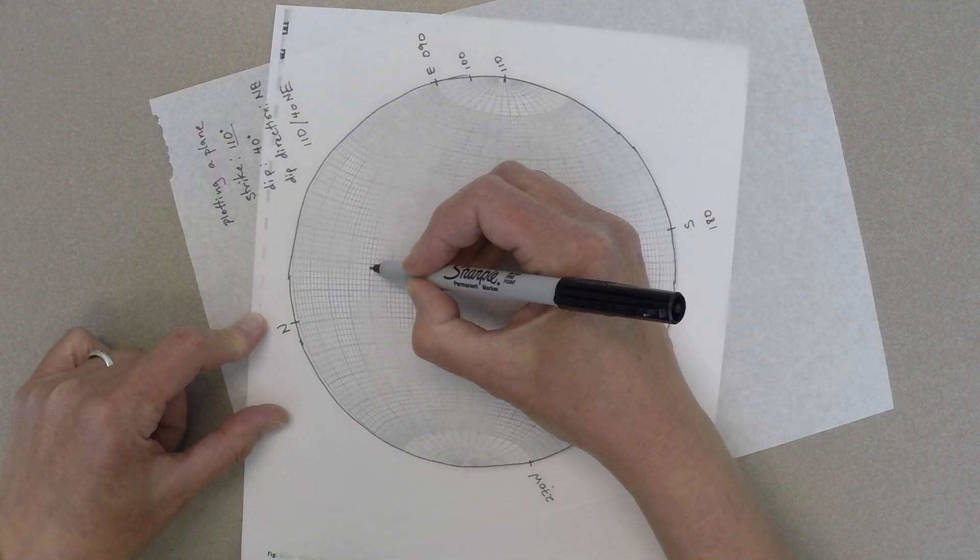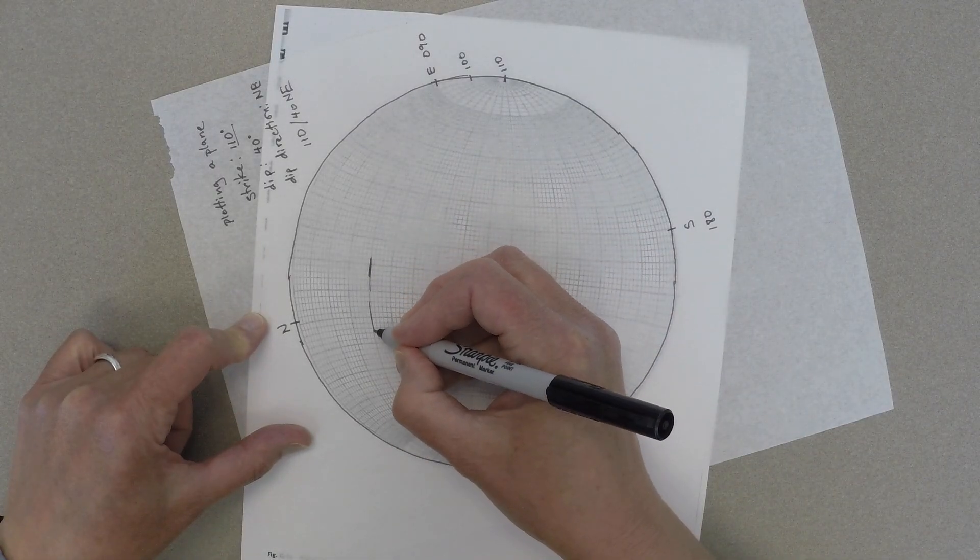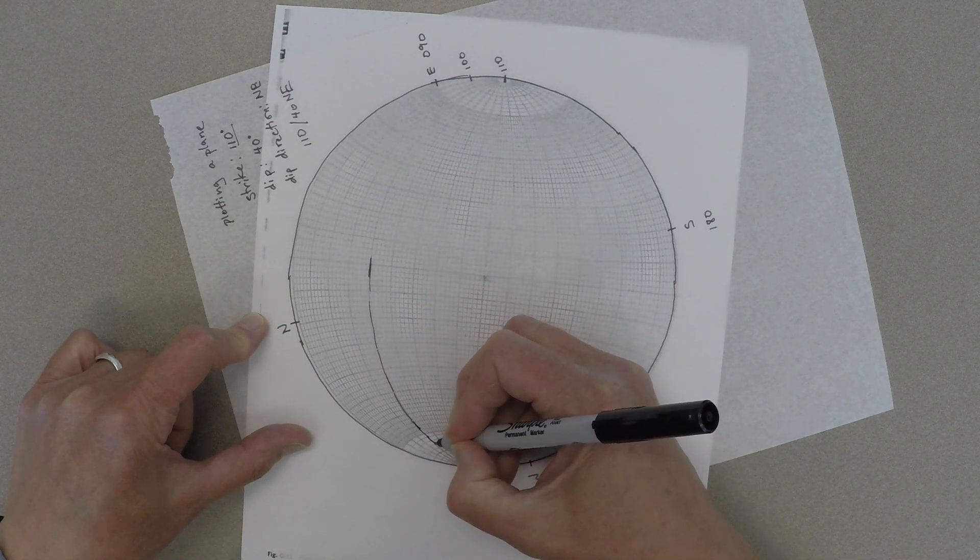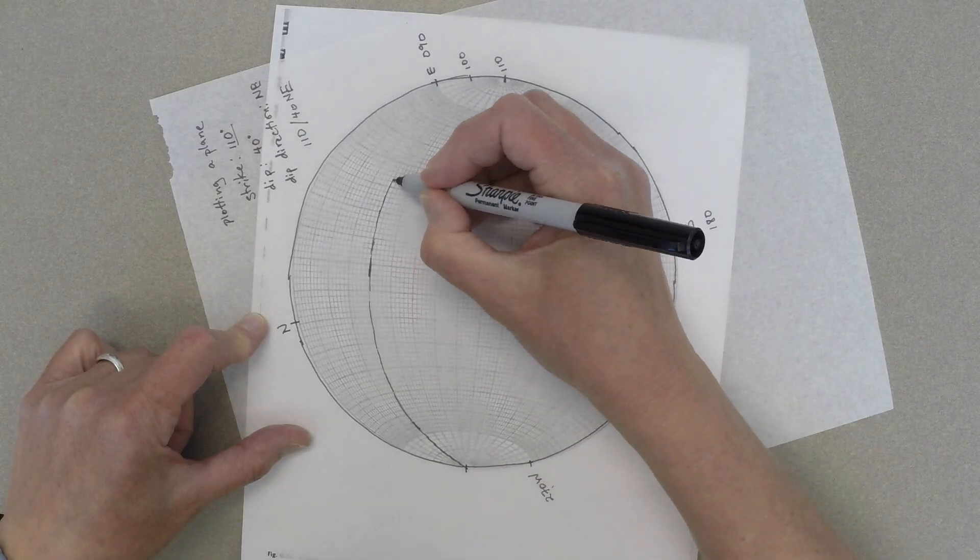Then we're going to count in, count the great circles in, until we find the dip, in this case, 40 degrees. And then trace the great circle line that'll make a curve on your stereo net.